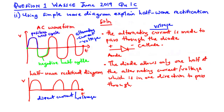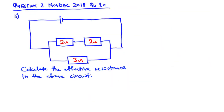Now let's solve our second question — WASI Nov/Dec 2018 question 1c. We have a diagram with a voltage source and three resistors: a 2 ohm resistor, another 2 ohm resistor, and a 3 ohm resistor. We have to find the effective resistance in the circuit. Effective resistance and total resistance are the same thing.